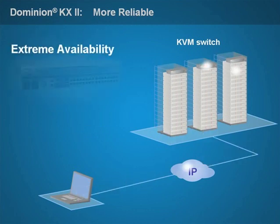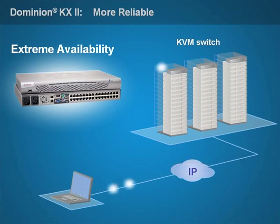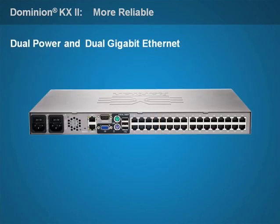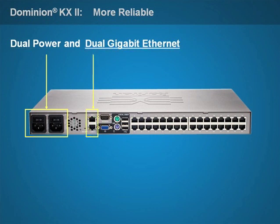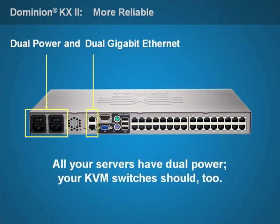Dominion KX2, and only Dominion KX2, delivers this level of extreme reliability. Every single model in the Dominion KX2 family provides dual AC inputs, dual internal power supplies, and dual gigabit ethernet ports, all with automatic failover and for no additional cost. It just makes sense — all of your production servers feature dual power supplies and dual ethernet. Obviously, your KVM should too.